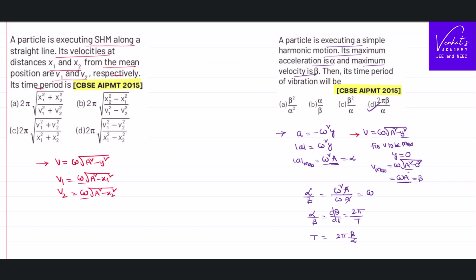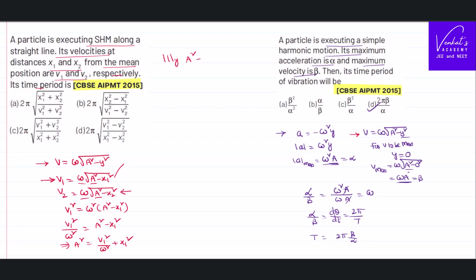You cannot simply divide the two equations because omega would cancel and you would never get the time period. Instead, eliminate the amplitude, since it is not given and does not appear in any answer option. Squaring the first equation: v1² = ω²(a² − x1²), so a² = v1²/ω² + x1². Similarly from the second equation: a² = v2²/ω² + x2². Since both left-hand sides equal a², we can equate the right-hand sides.